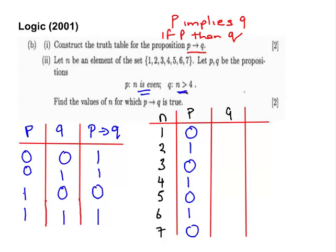The next one is Q, N is greater than 4. So 1 is not greater than 4, 2 is not greater than 4, 3 is not greater than 4. Now, watch out for this one: N is greater than 4. 4 isn't greater than 4, so that's a 0 there. Then 1, 1, and 1.